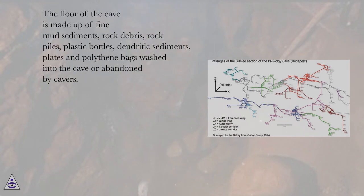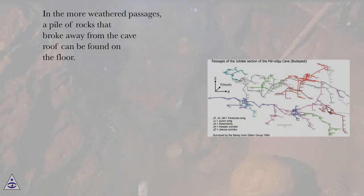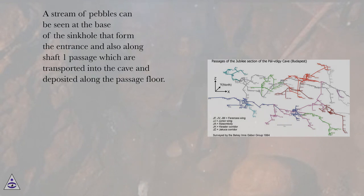The floor of the cave is made up of fine sediments, rock debris, rock piles, plastic bottles, dendritic sediments, plates, and polythene bags washed into the cave or abandoned by cavers. In the more weathered passages, a pile of rocks that broke away from the cave roof can be found on the floor. A stream of pebbles can be seen at the base of the sinkhole that forms the entrance, and also along shaft 1 passage, transported into the cave and deposited along the passage floor.